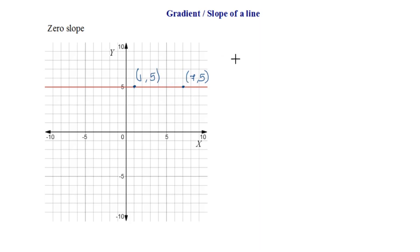We know the formula which is m equals y2-y1 that is 5-5 upon x2-x1. So this becomes 0 by 6 which is equal to 0. Also you can see that on this horizontal line the y is not changing, or you can say there is no vertical change in the line.